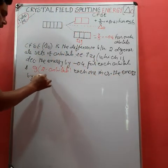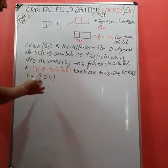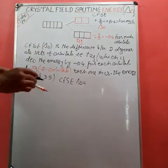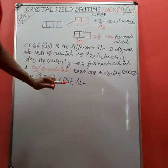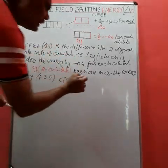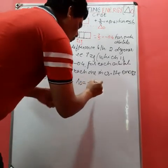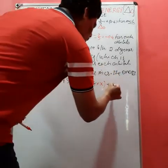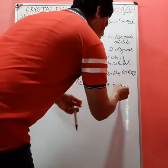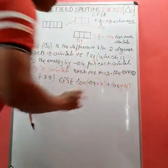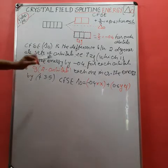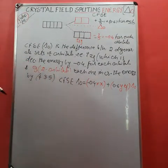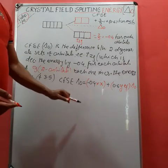The CFSE energy, denoted by delta-oh, is equal to: minus 0.4 multiplied by x, where x is the number of electrons in t2g orbitals, plus 0.6 multiplied by y, where y is the number of electrons in eg orbitals. By taking the differences in their energies, we can find the octahedral CFSE value.